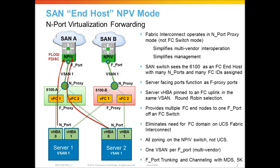End host mode also simplifies multi-vendor interoperations. While you have Cisco UCS, you could attach that elegantly upstream to a Brocade network because we're using standards-based NPIV attachments to F ports. There are no concerns about a Cisco switching mode interoperating with a Brocade switching mode because the fabric interconnect is not really presenting itself as a fiber channel switch.